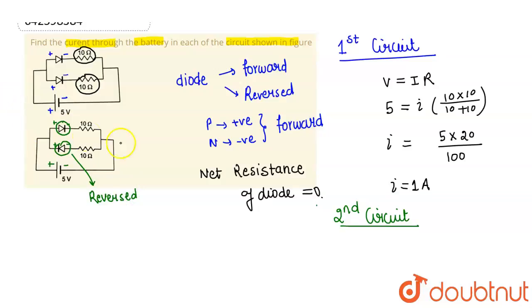So we know that in reversed biased circuit or diode, this acts as an open key or open circuit. It acts as an open circuit, hence this particular branch is of no use, this particular branch is of no use.